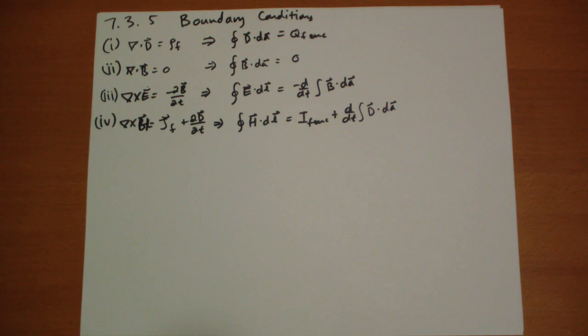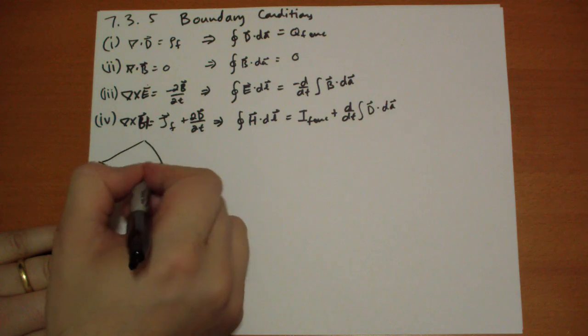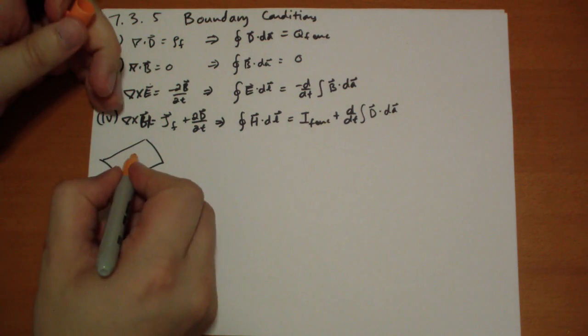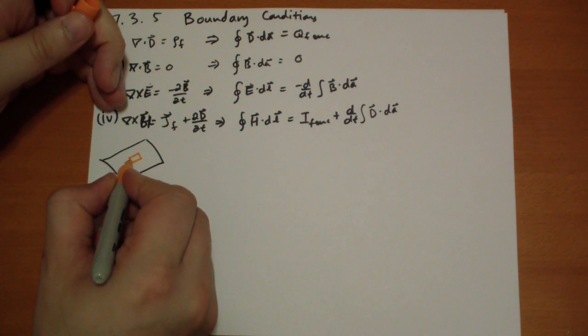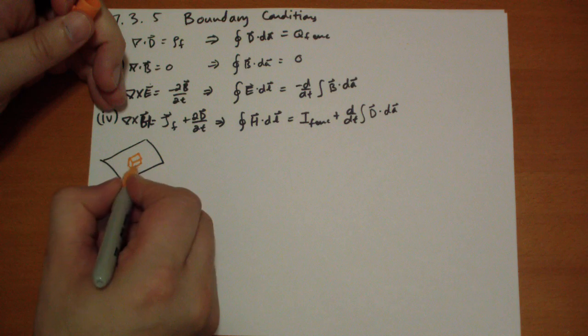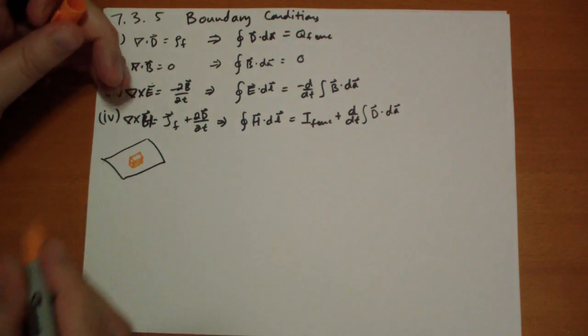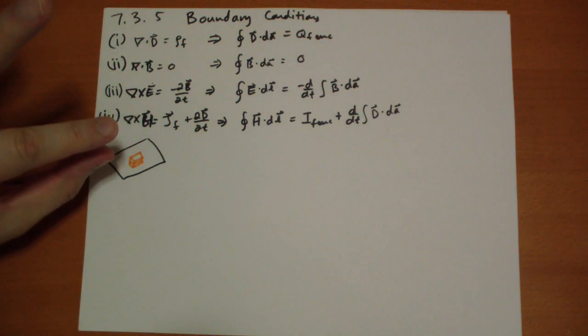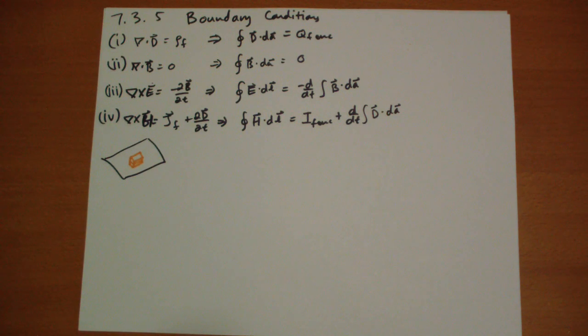Starting with number one, the interesting case is when you have a surface charge density sigma f. Let me draw a box. We have a surface and a Gaussian box that penetrates that surface. We're going to take the limit as the height of that box approaches zero, so we get very close to the surface.